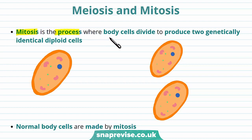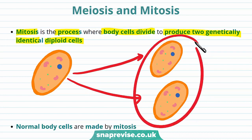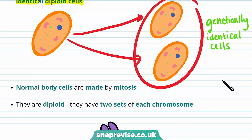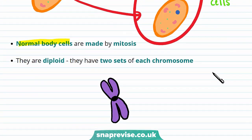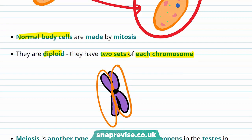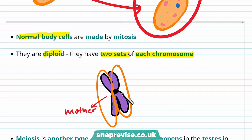Mitosis is the process where body cells divide to produce two genetically identical diploid cells. So in this diagram, this cell divides to produce two genetically identical cells. Mitosis makes normal body cells and these body cells are diploid, meaning they have two sets of each chromosome. So in this diagram there are two chromosomes — one set could be from the mother and one chromosome could be from the father.